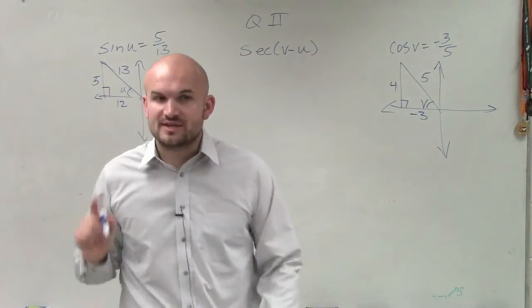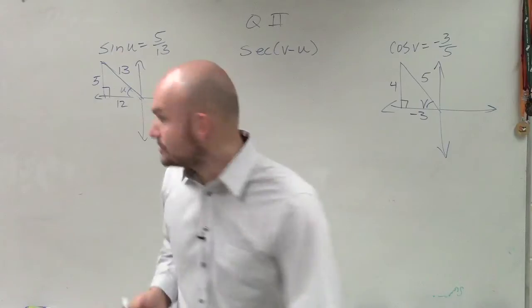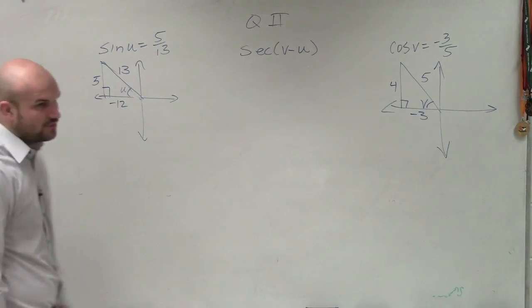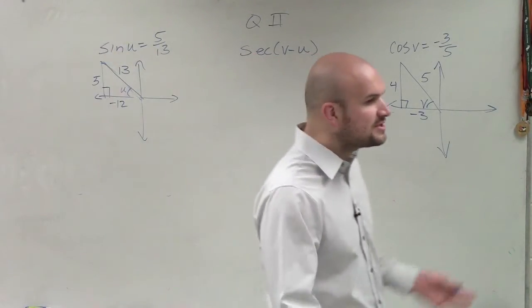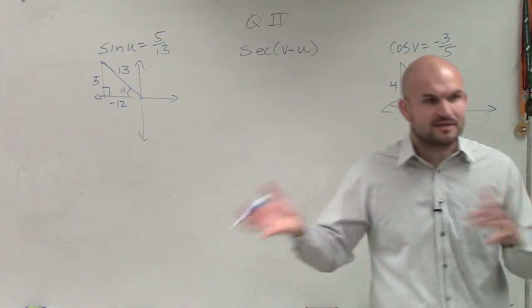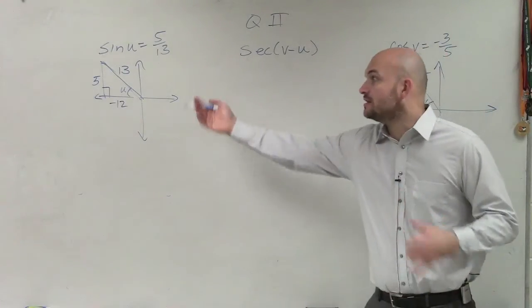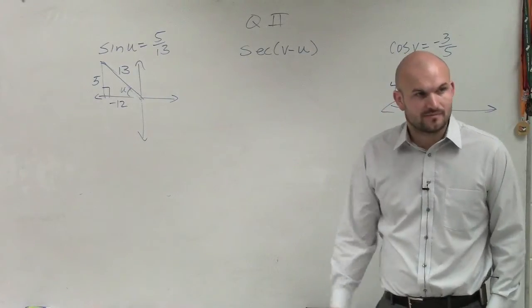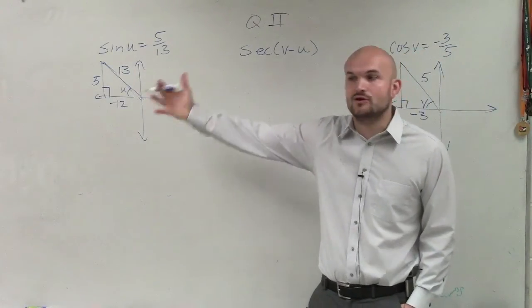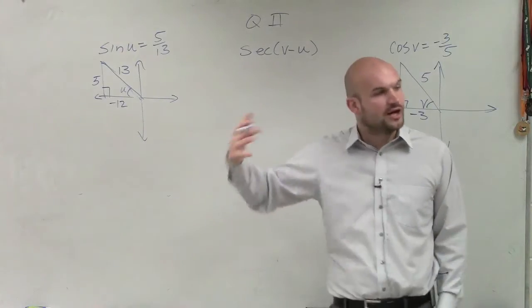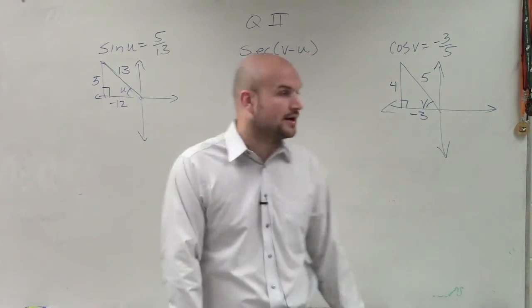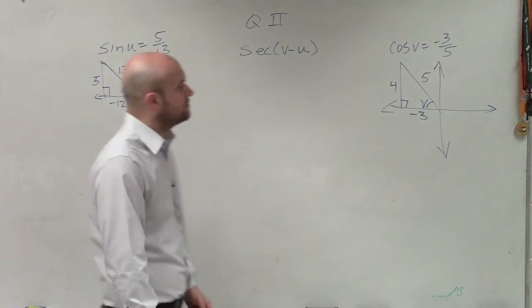It's very important to note that since this is in the second quadrant, this value is negative 12. Because remember, taking the square root, you do plus or minus anyway. And knowing that it's in the second quadrant, your x value is going to be negative. These are Pythagorean triples — they work for the Pythagorean theorem. You can also just use the theorem and actually solve them if you don't recognize that.